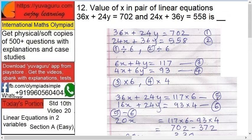Let's solve them. 36x plus 24y equals 702 and 24x plus 36y equals 558. Try to simplify as much as possible. Try to find a common factor in each equation separately, not in both together. Try to find a common factor in equation one.